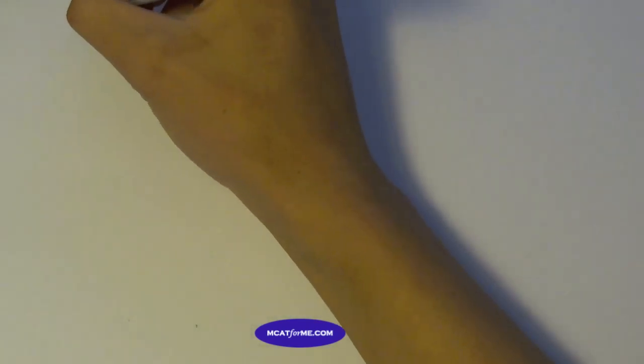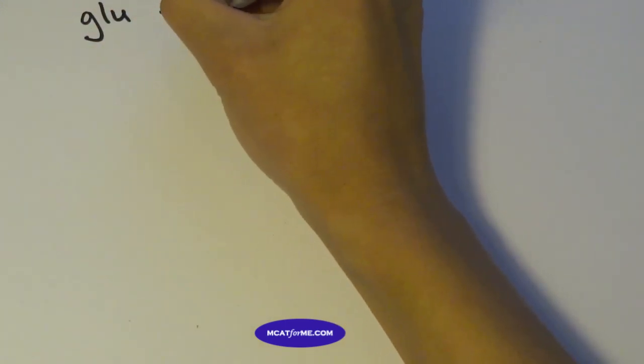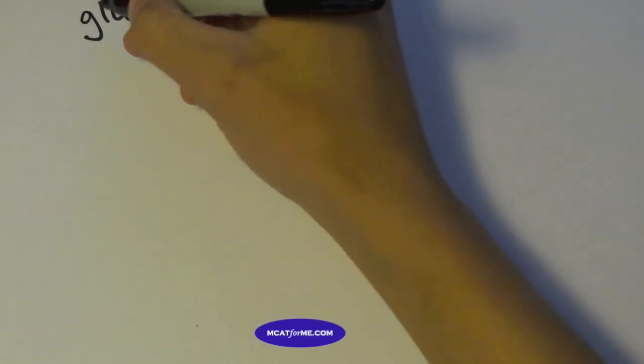but I don't want you guys to memorize it. I just want you guys to kind of be familiar with it. And I'm not going to draw every single intermediate or every single enzyme. But the first step would be glucose to glucose 6-phosphate. Actually, before we do this,